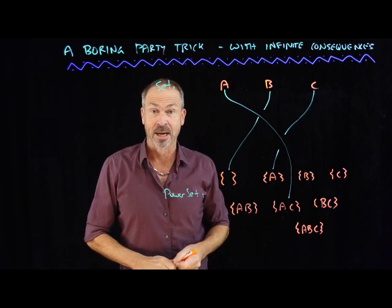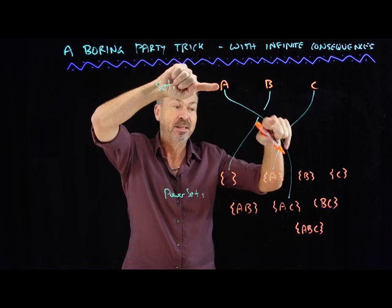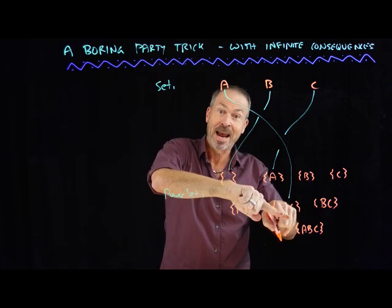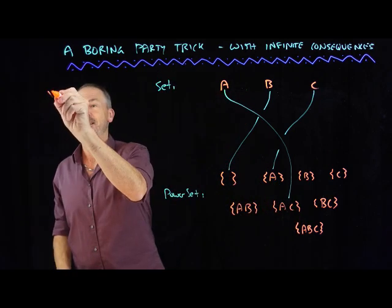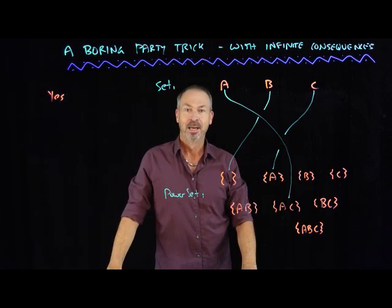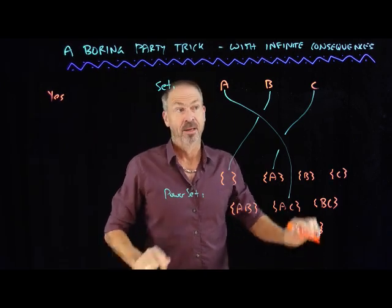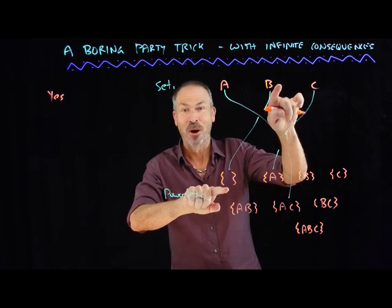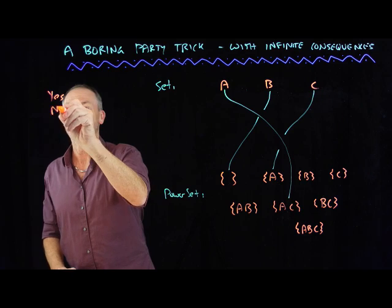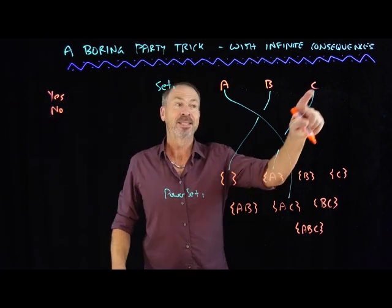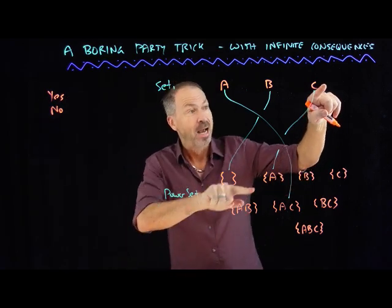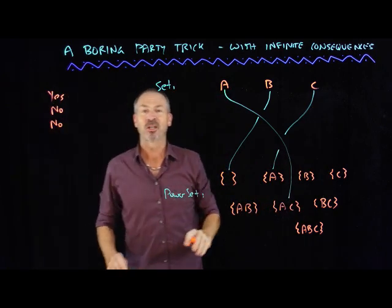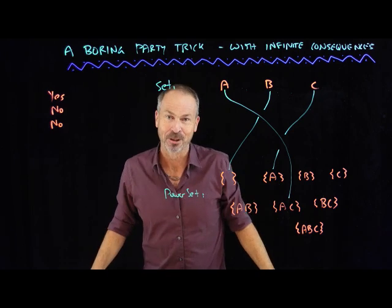Here's the first question you ask: is the letter A in the subset to which it's leashed? The audience member looks and says — A, is it in that set A, C? The answer is yes. Second question: is B in the subset to which it's leashed? Is B in the empty set? Well, nothing's in the empty set. No, B's not in there. And the third question: is C in the subset to which it's leashed? Is C in that set? No. Again, no. So you've asked three questions, one for each letter of the alphabet at the top of the page.